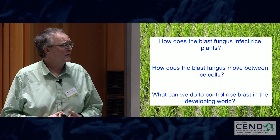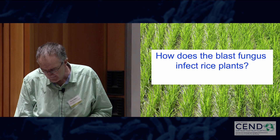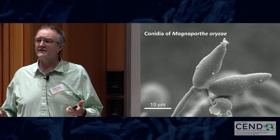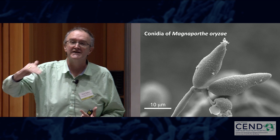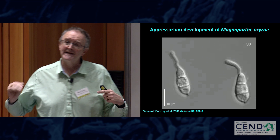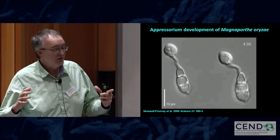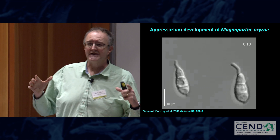So how does the blast fungus infect rice leaves? The disease cycle starts when three-celled spores land on the surface of a rice leaf. They carry their own adhesive, released upon hydration, which sticks the spore very tightly to the hydrophobic waxy cuticle. The spores then immediately germinate, sending out a polarized germ tube, which differentiates within about four hours into a dome-shaped cell called an appressorium — the infectious propagule from which all subsequent fungal material will be derived.